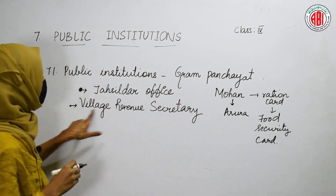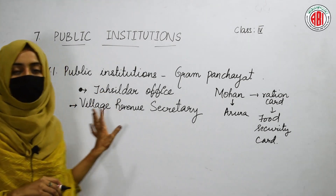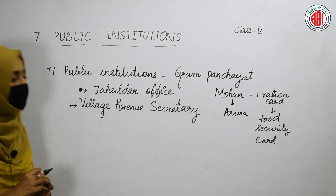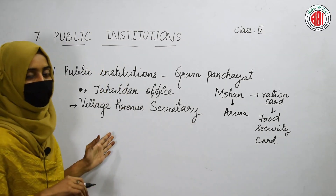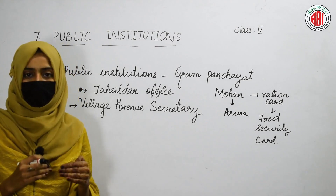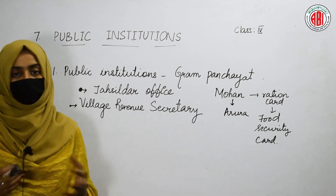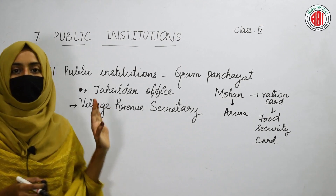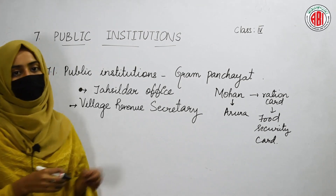Mohan went to the Village Revenue Secretary with his daughter Aruna and asked him to make his ration card. The Village Revenue Secretary asked Mohan to write an application letter on white paper. Aruna wrote the application and handed it over to the Village Revenue Secretary, who then checked and verified Mohan's details and applied the application form online.